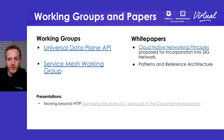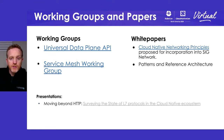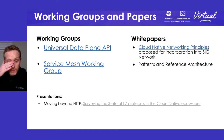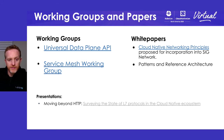Part of the activities within the special interest group are to establish and help provide a platform for individual working groups with different focuses. One of those is the Universal Data Plane API Working Group, or UDPA, which is essentially the Envoy project's APIs being formalized and proposed as something of a standard or commonly referenced specification, somewhat independent of Envoy itself. The other working group established over the last few months is the Service Mesh Working Group.